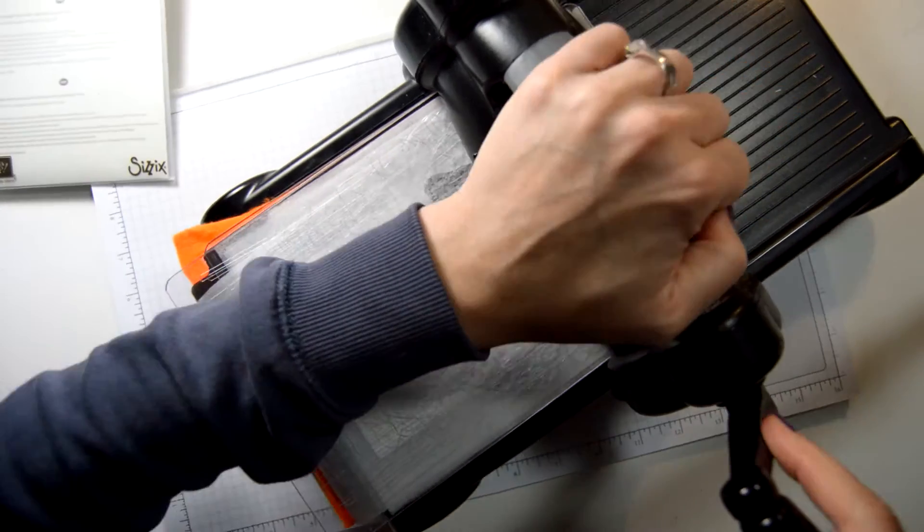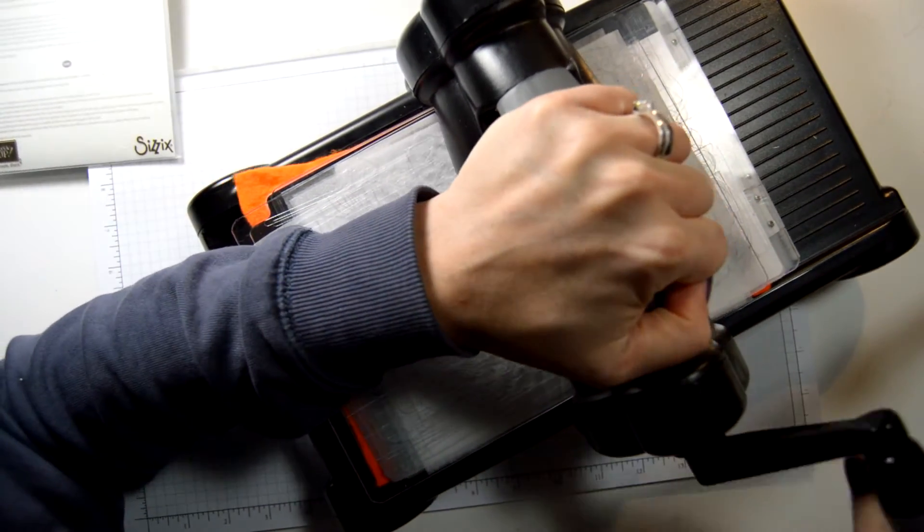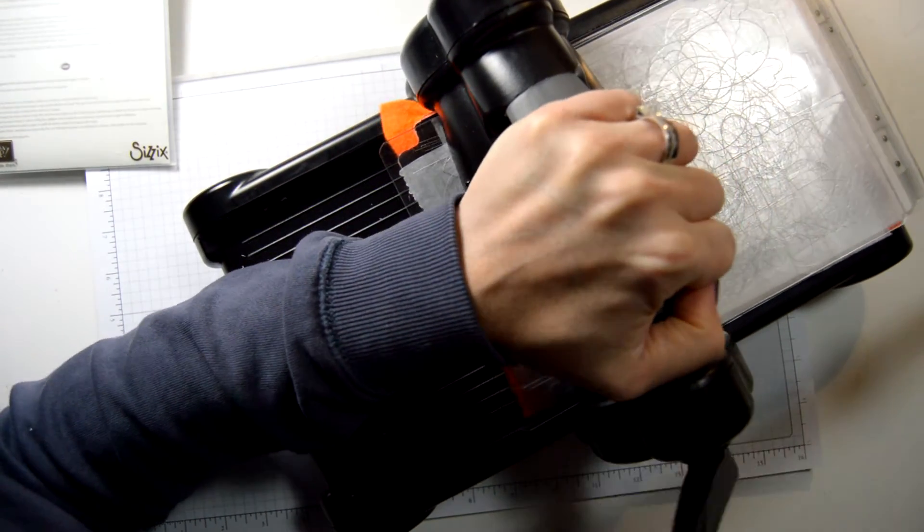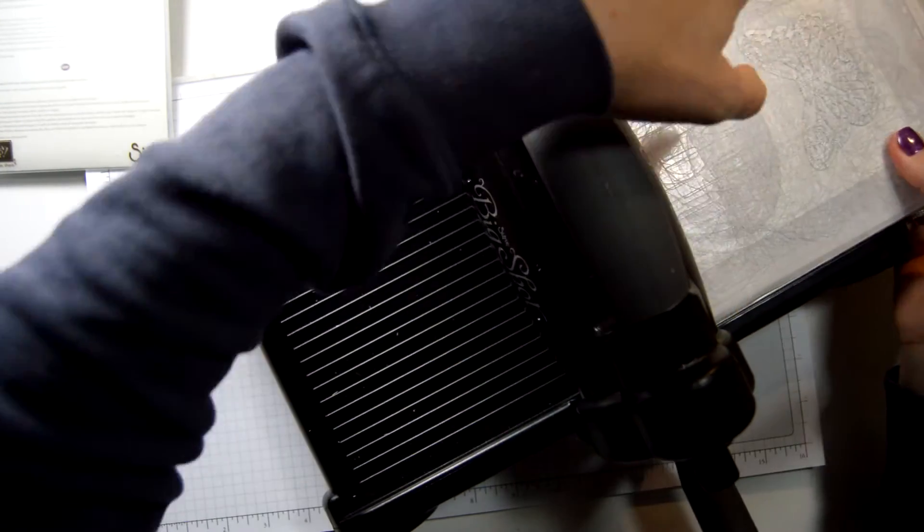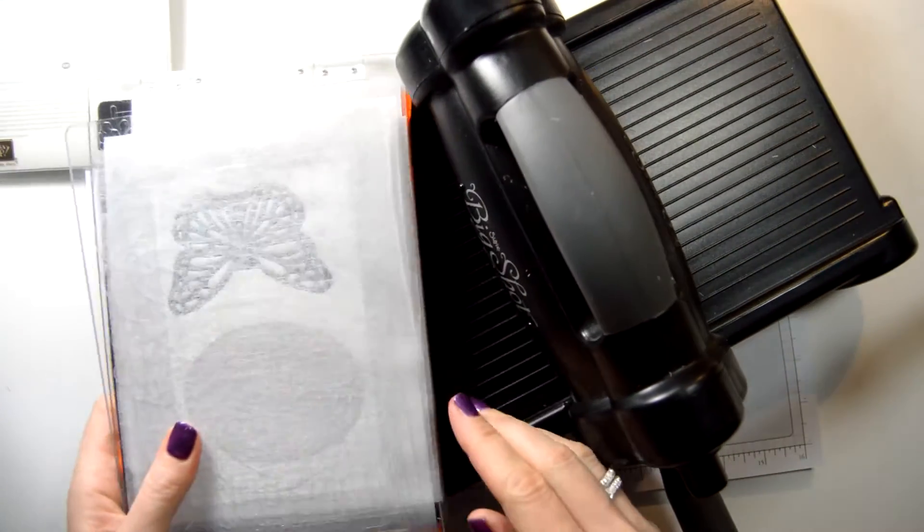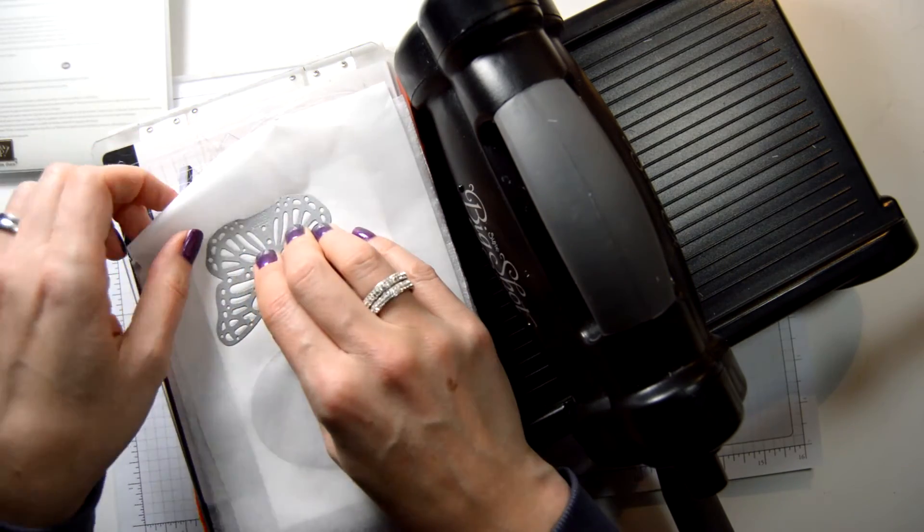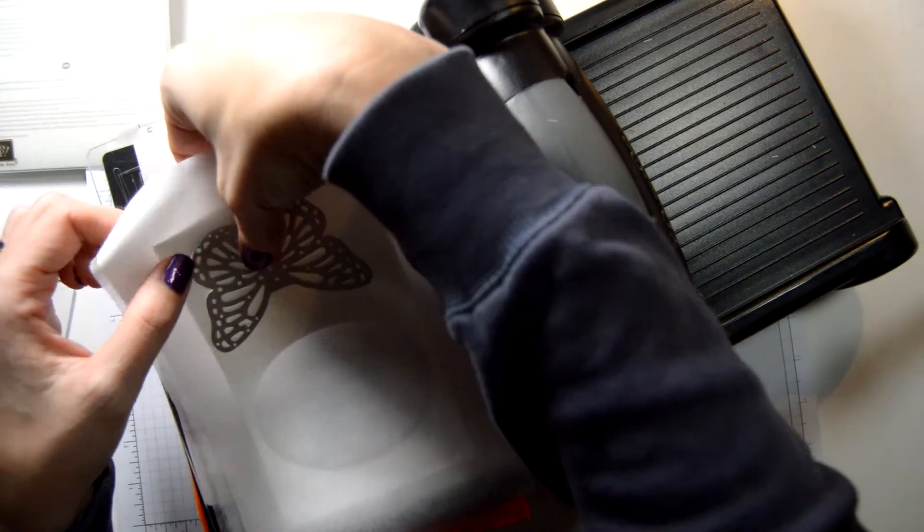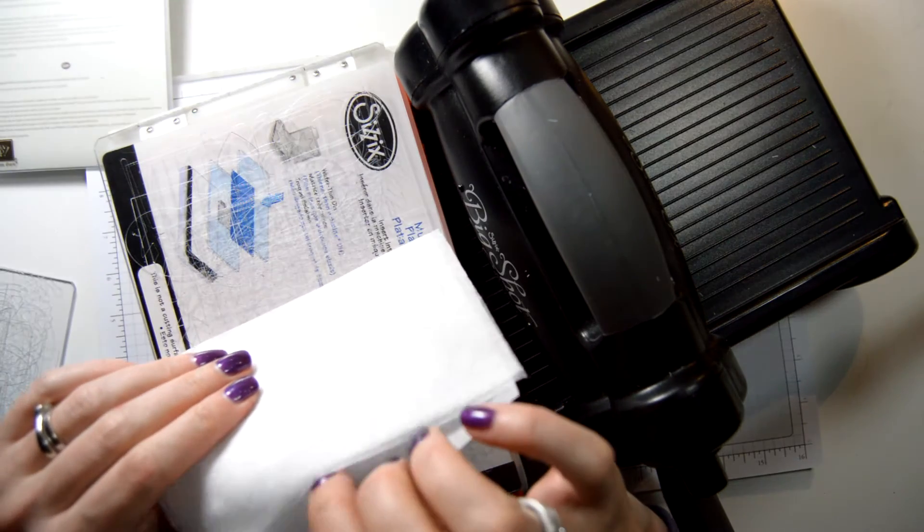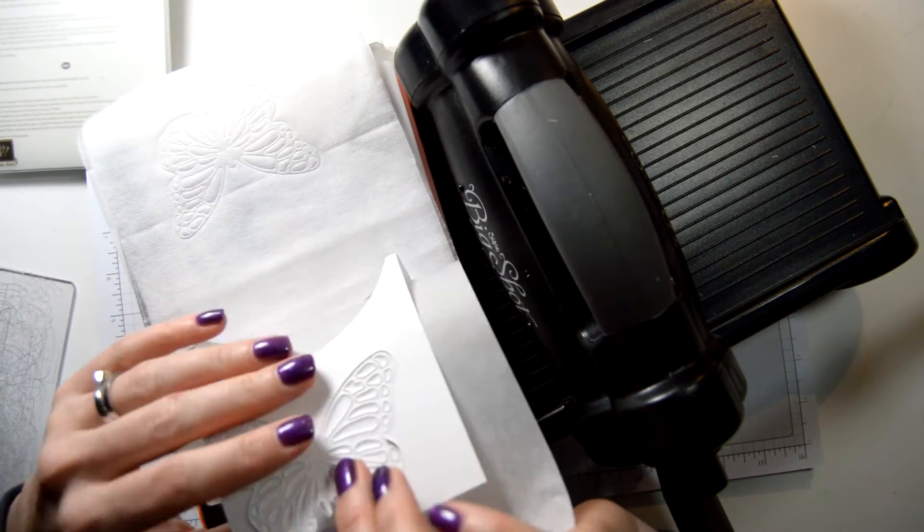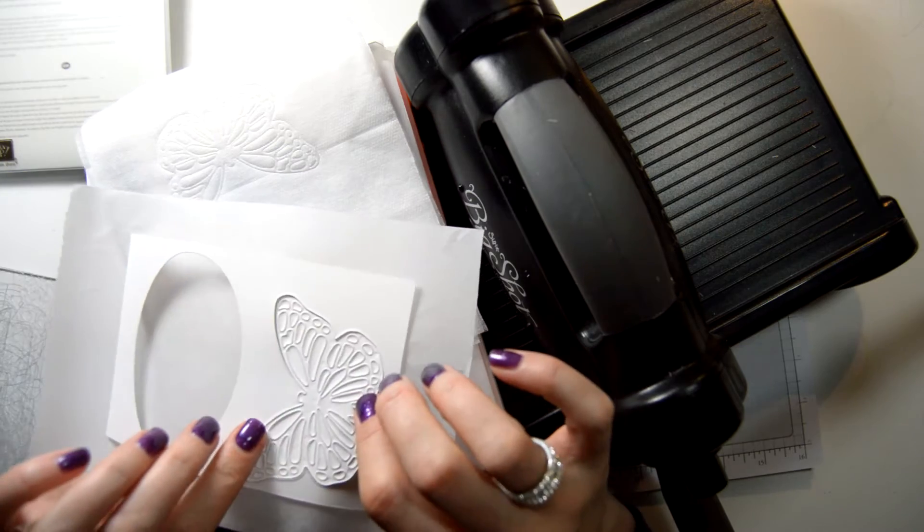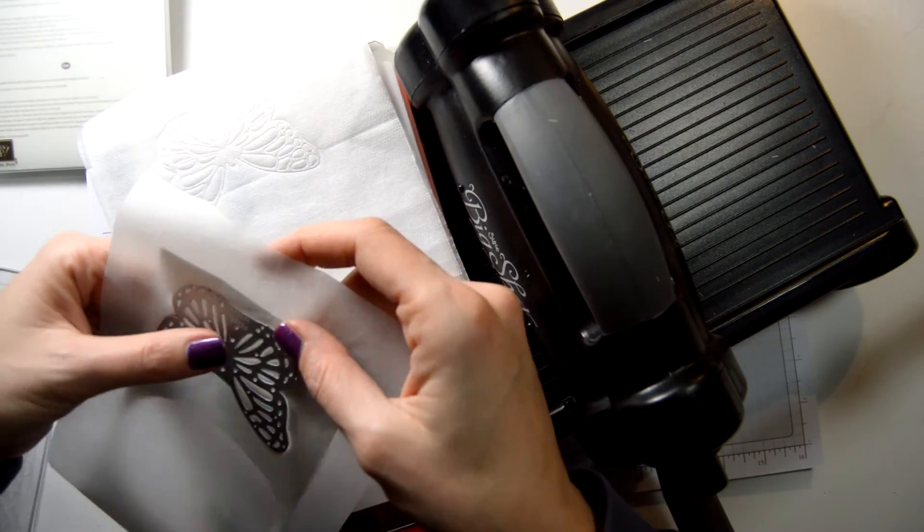Let's wheel this through. And your Big Shot is going to make all kinds of sounds. And let's see if this sandwich worked. If it hasn't, then we can also always put it through in the other direction just to be sure. And I think it has worked.